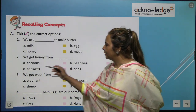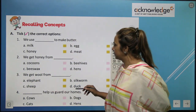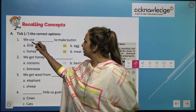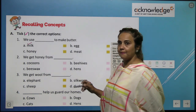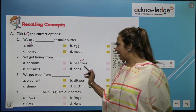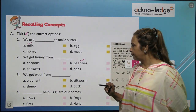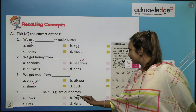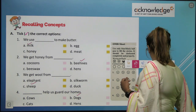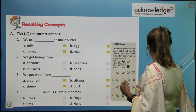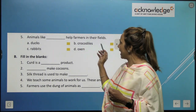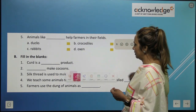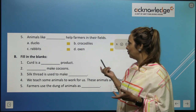Now, recalling concepts. We use milk to make butter. We get honey from beehives. We get wool from sheep. Dogs help us guard our homes. Animals like oxen help farmers in their fields. Come on, tell me — oxen.